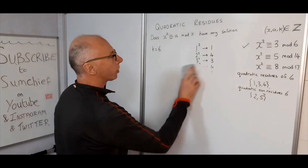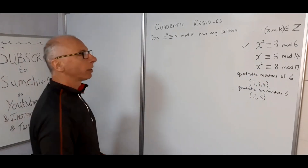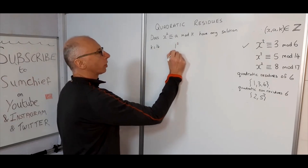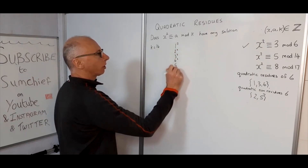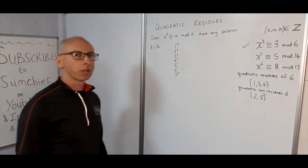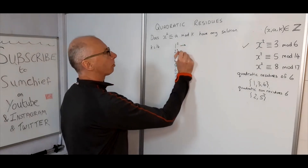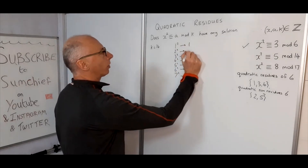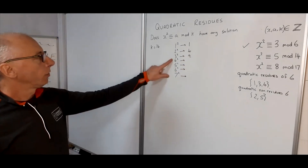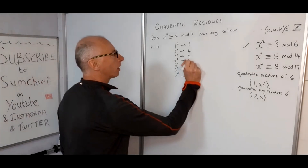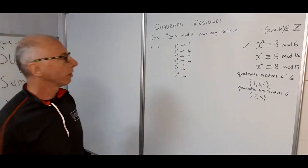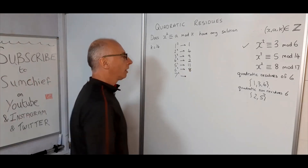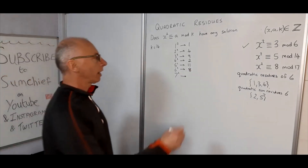Now let's look at modulus 14, where K = 14. I'm going to show a shortcut — we don't have to square all the numbers, just go to halfway, so up to 7². Working modulus 14: 1² = 1, 2² = 4, 3² = 9, 4² = 16 gives 2, 5² = 25 gives 11, 6² = 36 gives 8, and 7² = 49 gives 7.